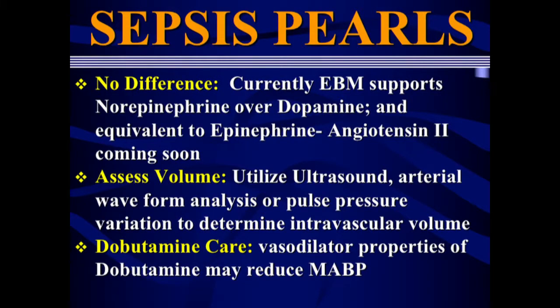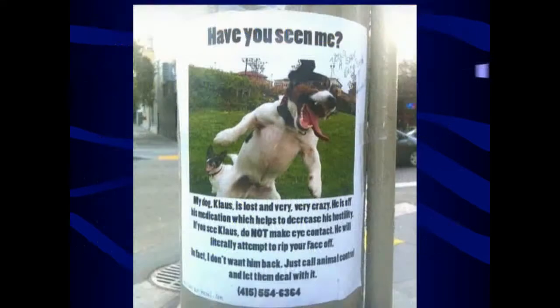Utilize ultrasound to look for volume status. Arterial waveform analysis and pulse pressure variation are very important. Use the probe looking at the left ventricle to assess LV dysfunction given vasodilatory properties associated with sepsis.